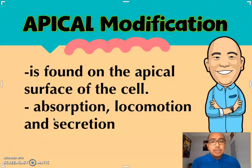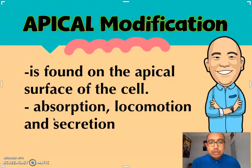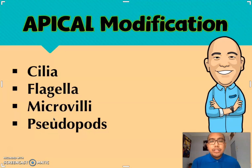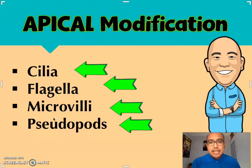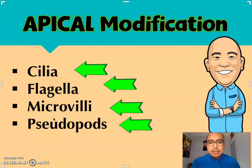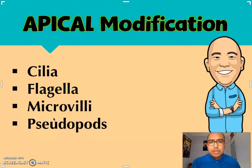The main function of apical modification is for absorption, for locomotion or movement, and for secretion. There are four types of apical modifications in cells: we have the cilia, the flagella, the microvilli, and the pseudopods.